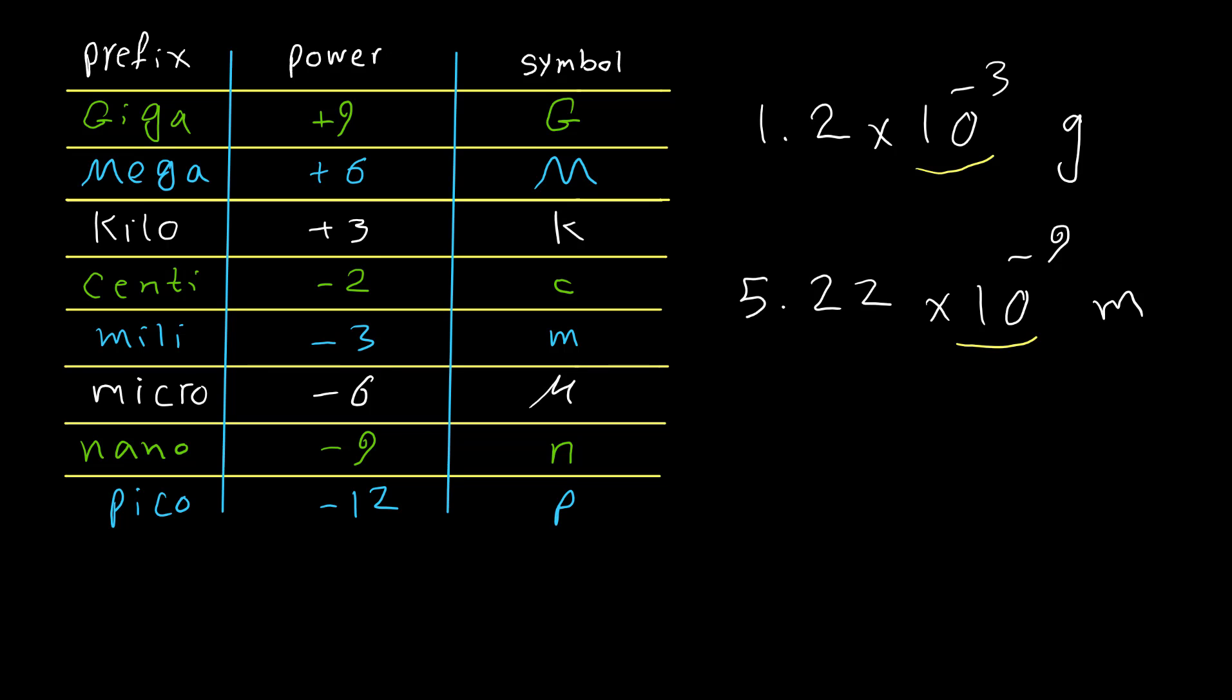So let's have some examples for application of this prefix. The negative 3 power belongs to milli, so instead of 10 to negative 3, I just simply put its symbol. So I can write 1.2 milligram. For next example, we have 10 to negative 9. And we can see here 10 to negative 9 means nano. So I can just write 5.22, instead of 10 to negative 9 I'm going to put its symbol n and then the unit. So 5.22 nanometer.